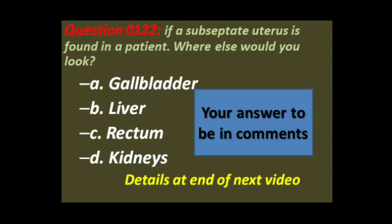The question is: if a septate uterus is found in a patient, where else would you look? The options are: A) gallbladder, B) liver, C) rectum, D) kidneys. This question will be answered in the next video.